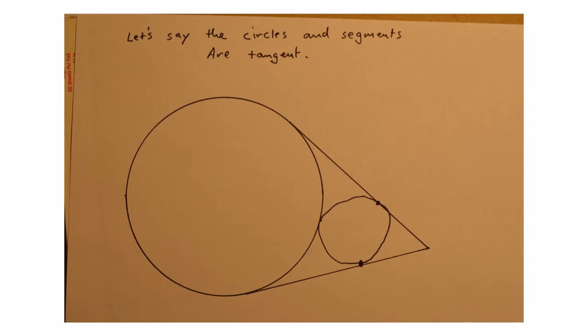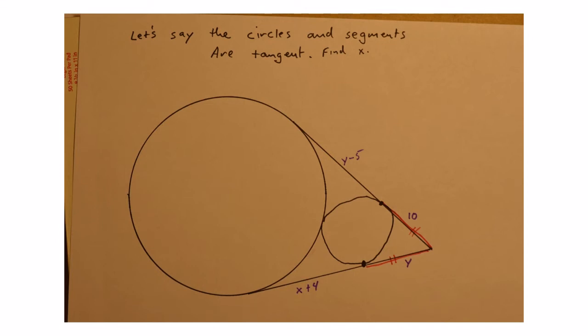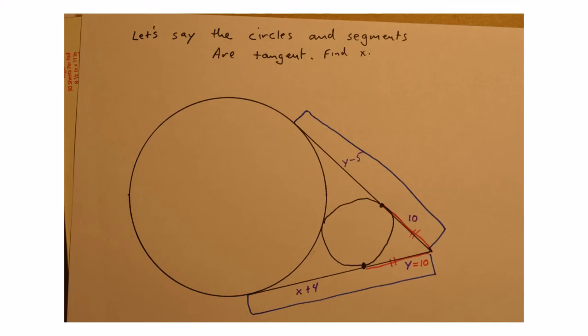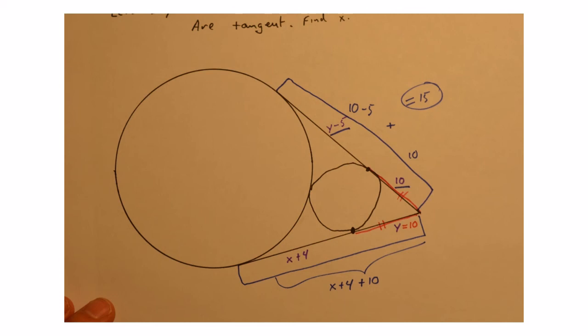Let's say we have two circles with tangent segments, and we know the segment lengths are y minus 5, 10, y, and x minus 4. Looking at the small circle, the two segments are tangent from the same exterior point, so y equals 10. Then looking at the two tangent lines from the same exterior point on the larger figure, the blue segments must also be congruent. Since y is 10, the top length is 15, and therefore the bottom length must also equal 15.